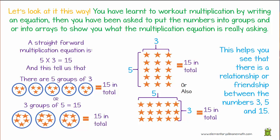Or we can turn that around and say that there are 3 groups of 5 totaling 15. Because with our commutative laws we can swap the numbers around with addition and with multiplication — we can't do this with subtraction and division, but we certainly can with multiplication and addition. The array here is just another example of exactly the same thing. We have 5 rows with 3 in each row totaling 15, or we have 3 rows with 5 in each row totaling 15. This helps you to see that there is a very special relationship between the numbers 3, 5, and 15.